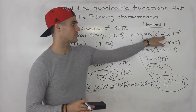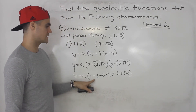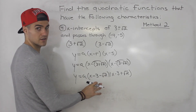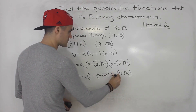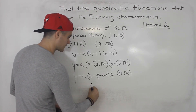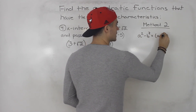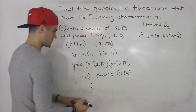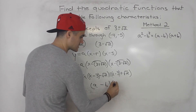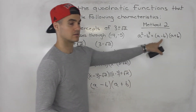Now method two: instead of fully foiling, recognize that (x - 3 - √2)(x - 3 + √2) is a difference of squares pattern — (a - b)(a + b) = a² - b² — where a is (x - 3) and b is √2. So we just multiply the first terms by each other and the last terms by each other.